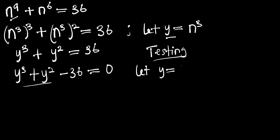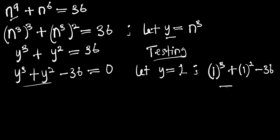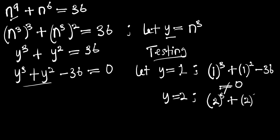Let's start by testing y equals 1. Substituting gives 1 to the power 3 plus 1 to the power 2 minus 36, which is not equal to 0. We try y equals 2: 2 to the power 3 plus 2 to the power 2 minus 36, which is also not equal to 0.